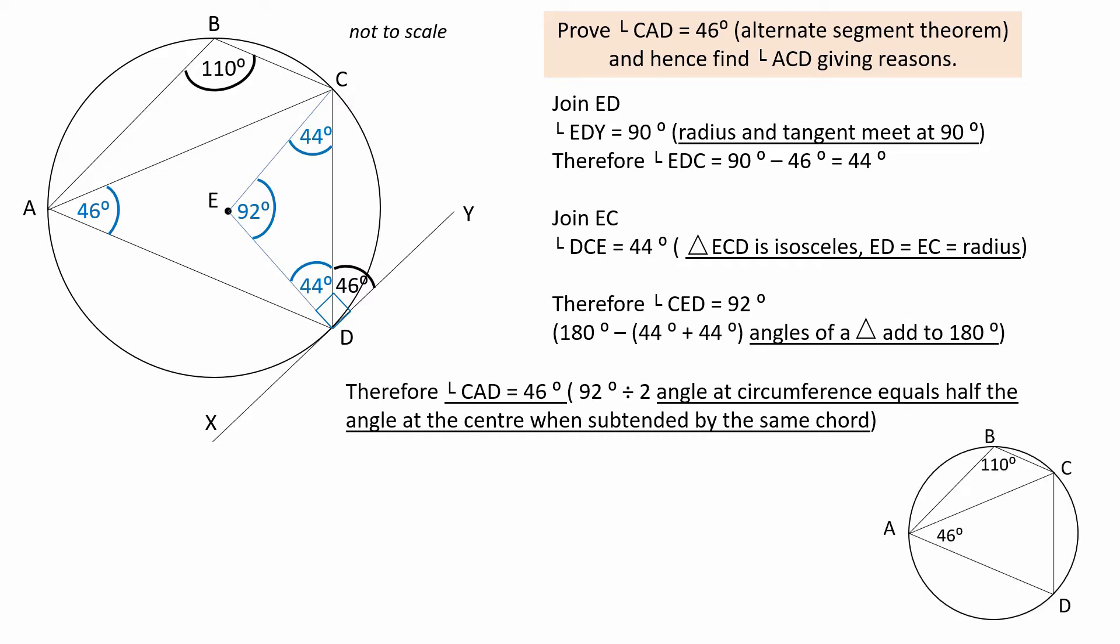The final part of the problem is to find angle ACD. To do this, it is useful to use a simplified sketch with angles of 110 given and 46 degrees proven.